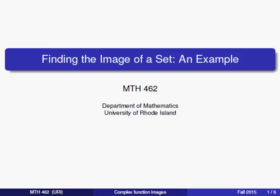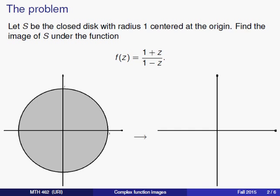Welcome back. In this video we're going to work through an example of finding the image of a set. The problem is this. Let's suppose that S is the closed disk with radius 1 centered at the origin, this region that's shaded there, including the boundary. We want to find the image of S under the function f shown here, 1 plus z divided by 1 minus z.